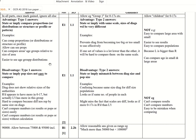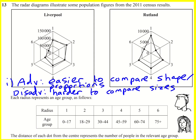I want to show the mark scheme because there are a lot of things accepted here. Type 1 answers: data imply comparing proportions — that's basically what I was saying. Disadvantage: it's harder to compare sizes. Type 2 answers state or imply that with the same scale, sizes of diagrams would be very different, or imply a mismatch between diagram size and population size. Something along those lines and you're sorted.